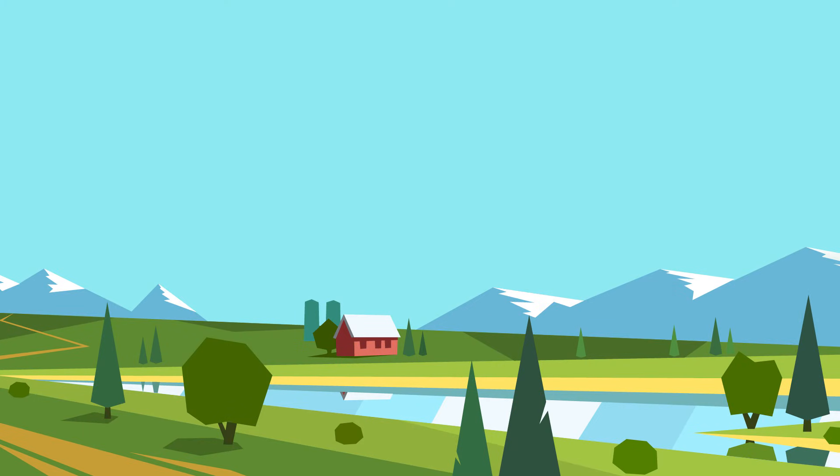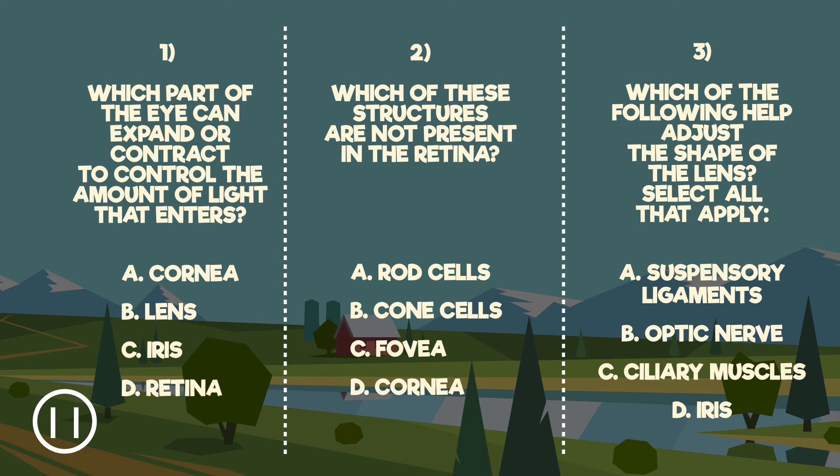So there we have the different parts of the eye and how they work together to give us sight. Give these questions a go to test your knowledge. Did you get them right?